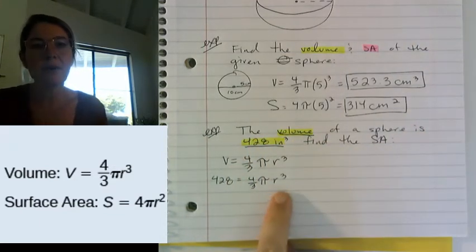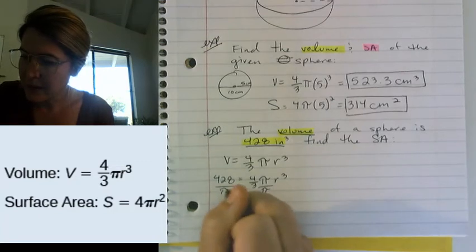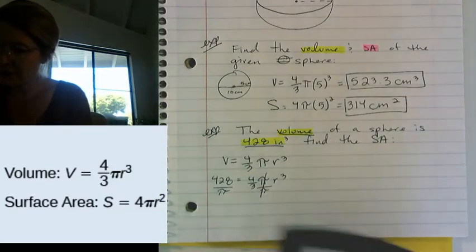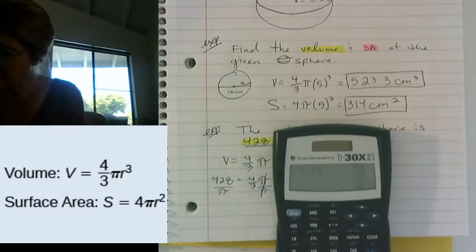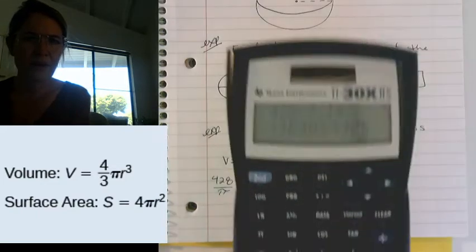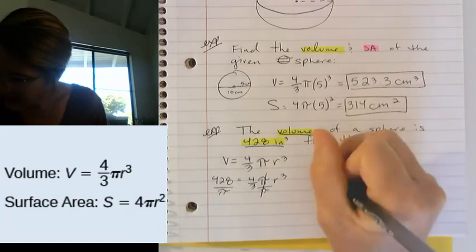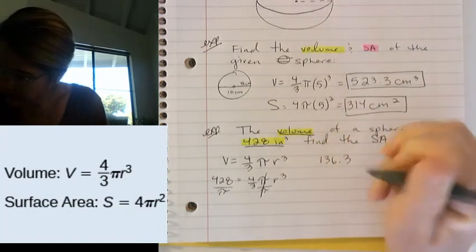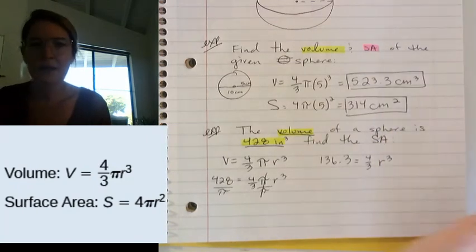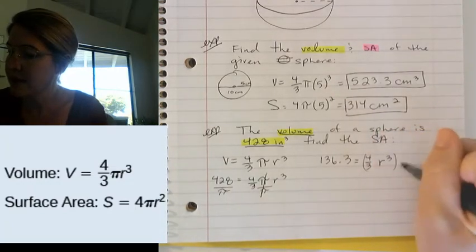Okay, so we're just going to isolate our variable. We want to get it all by itself. So I'm going to start by dividing by π. That'll make that guy go away. And then let's plug that into our calculator. So 428 divided by 3.14 is 136.3. It's kind of hard for you guys to see, isn't it? So I get that 136.3 is equal to 4/3 radius cubed. And now to get rid of a fraction, we need to multiply by the reciprocal.